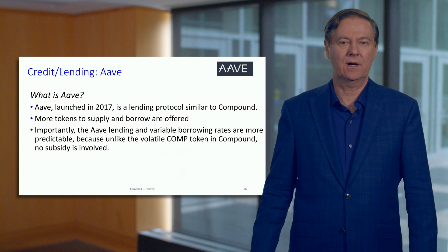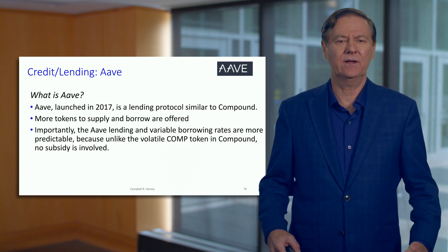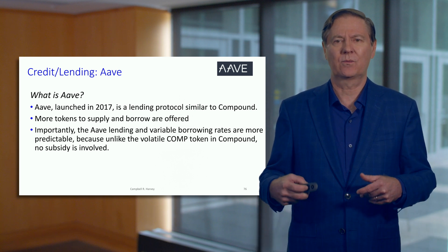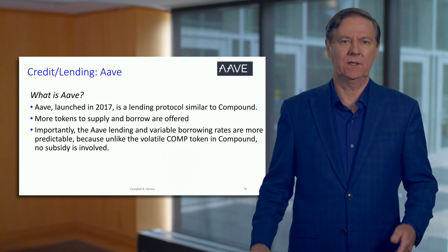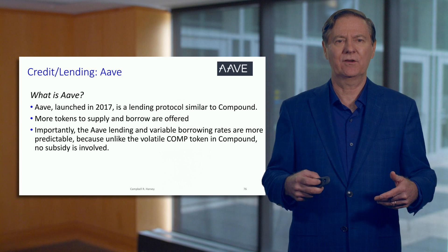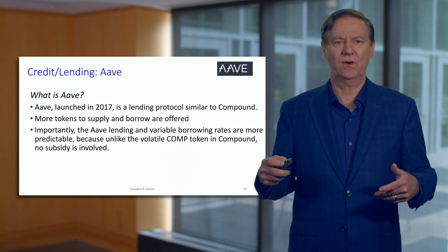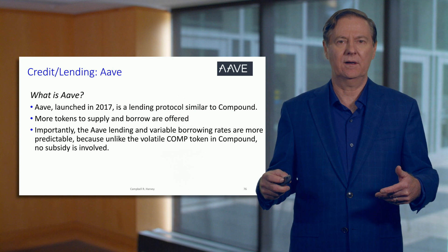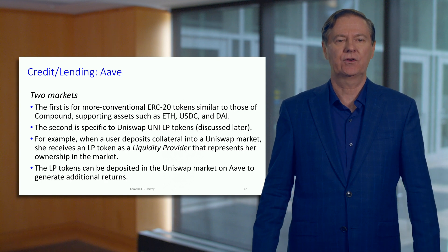Aave is also a leading protocol and it's similar to Compound. At this point in time, there are more tokens to supply and borrow within Aave. Aave also has something interesting in that the rates for borrowing and supply are more predictable. We already saw in Compound that as the utilization ratio increases, it could greatly increase the rate of interest cost. Aave offers something a little different in terms of this.